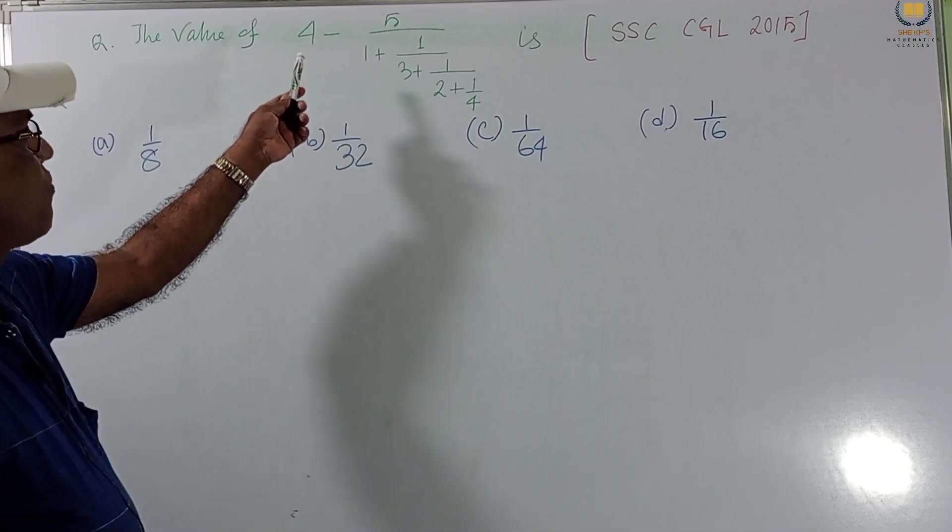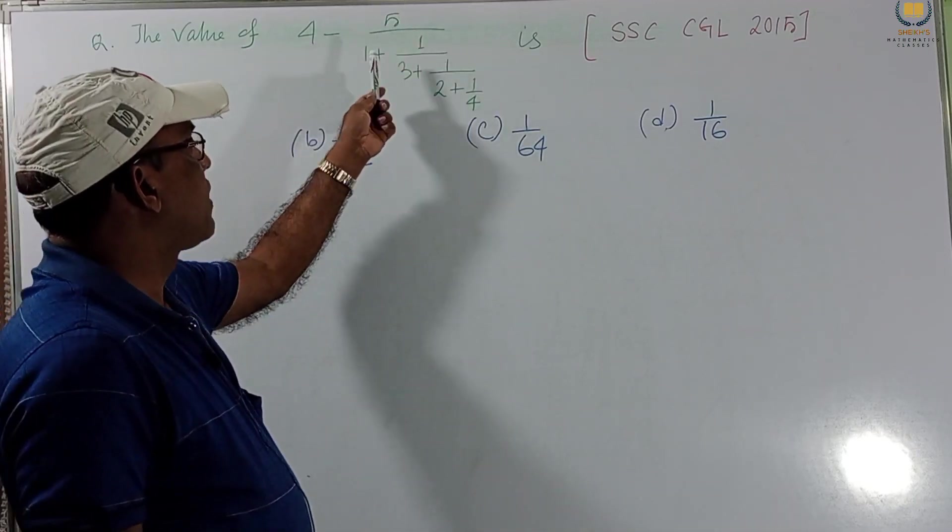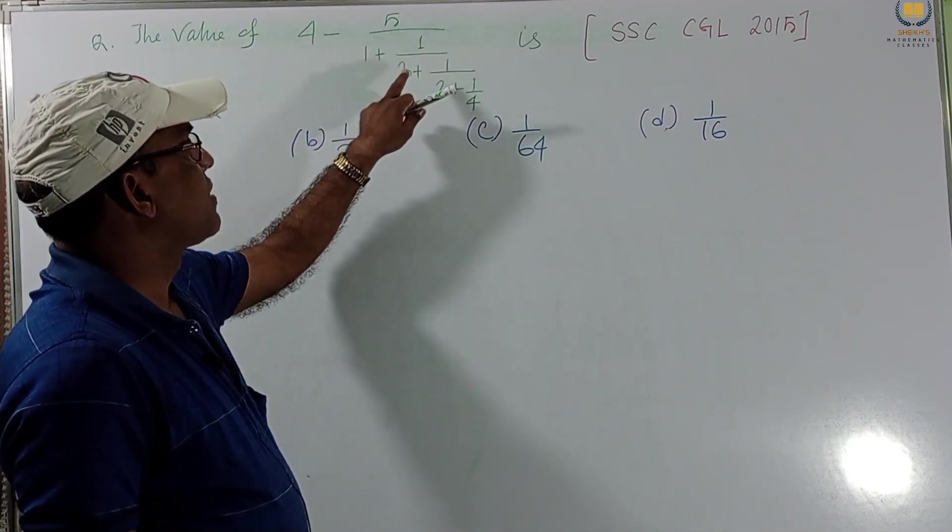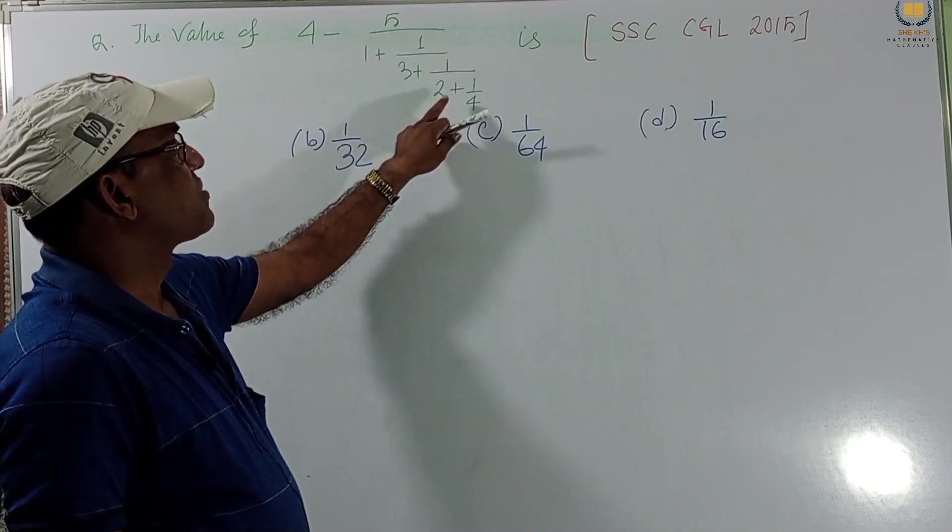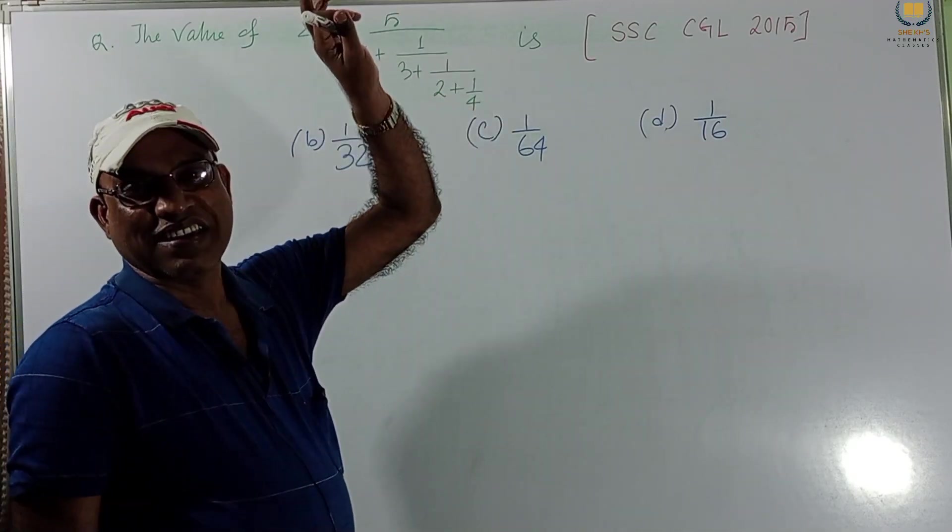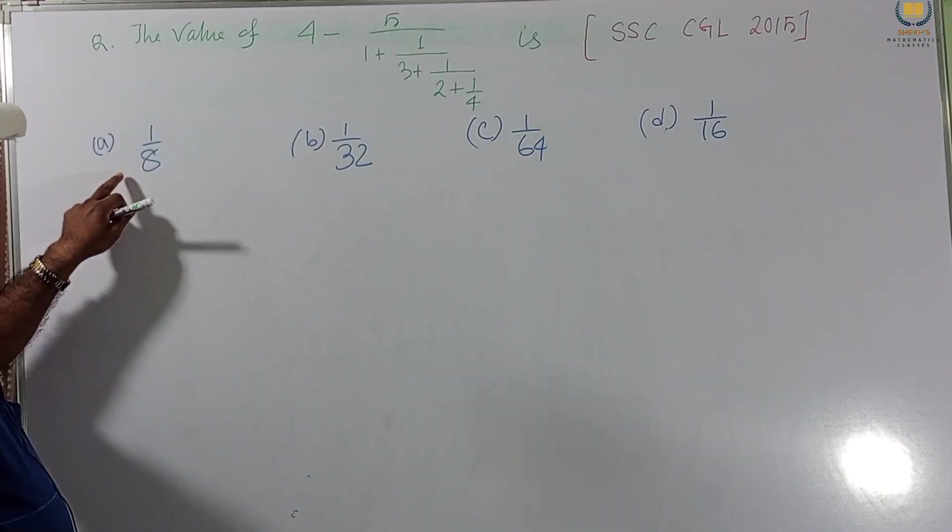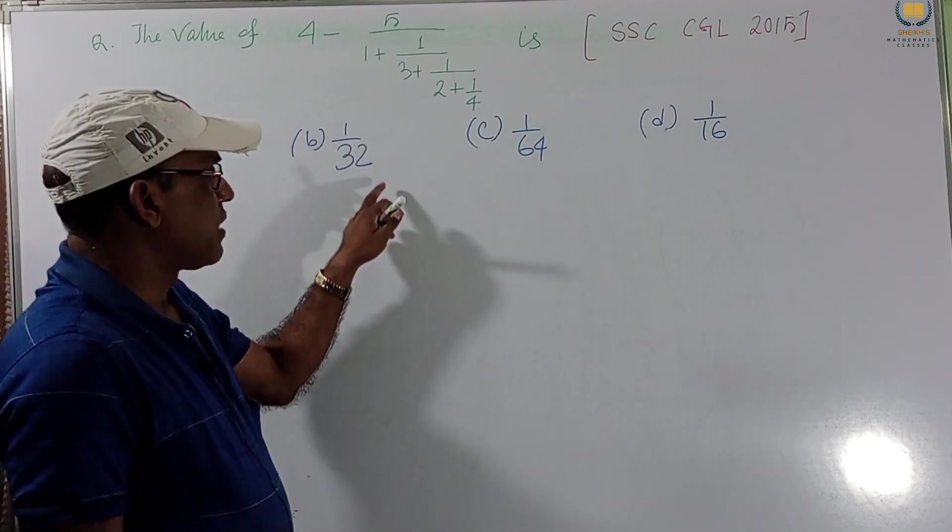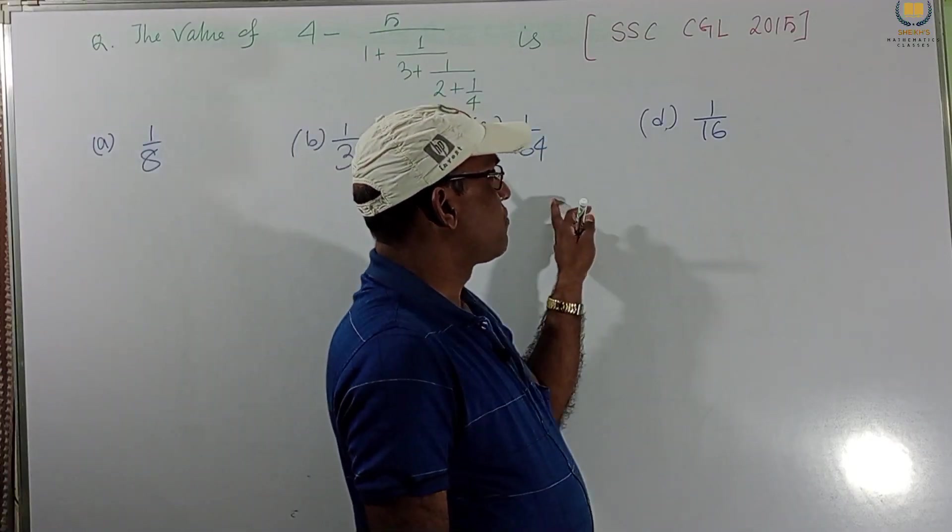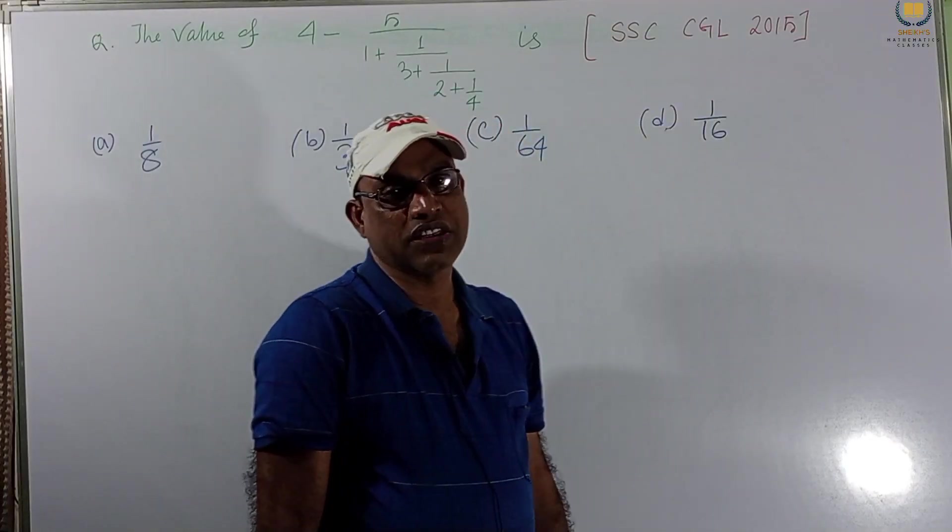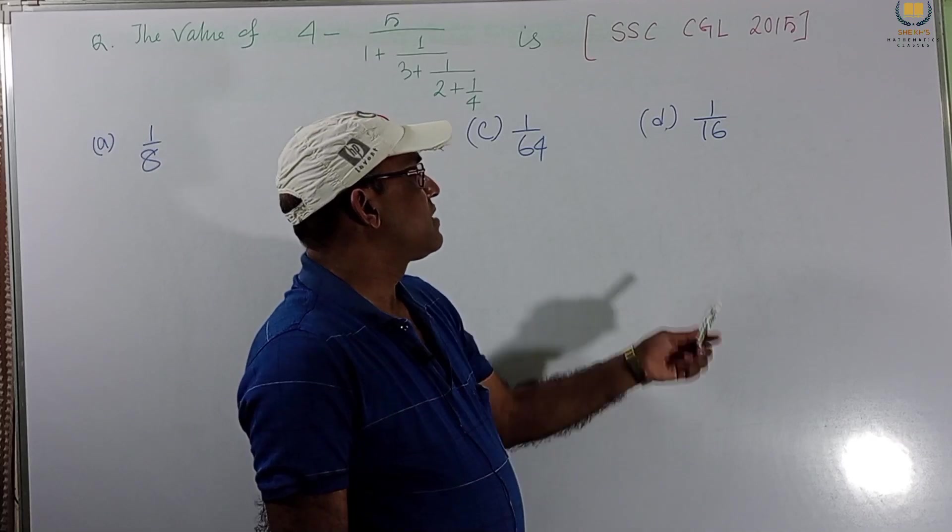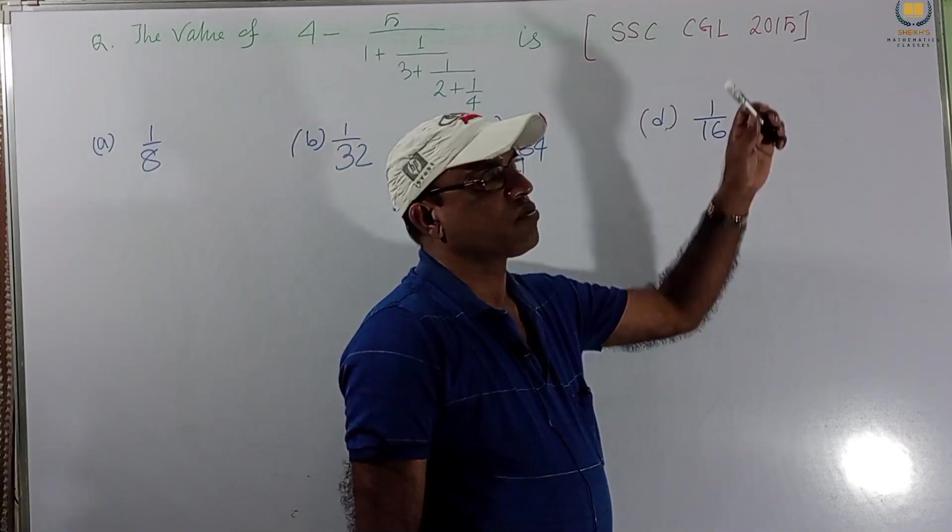The value of 4 minus 5 by 1 plus 1 by 3 plus 1 by 2 plus 1 by 4. This problem given. And option given A, 1 by 8. B, 1 by 32. C, 1 by 64. And D, 1 by 16. It was set in SSC CGL 2015.